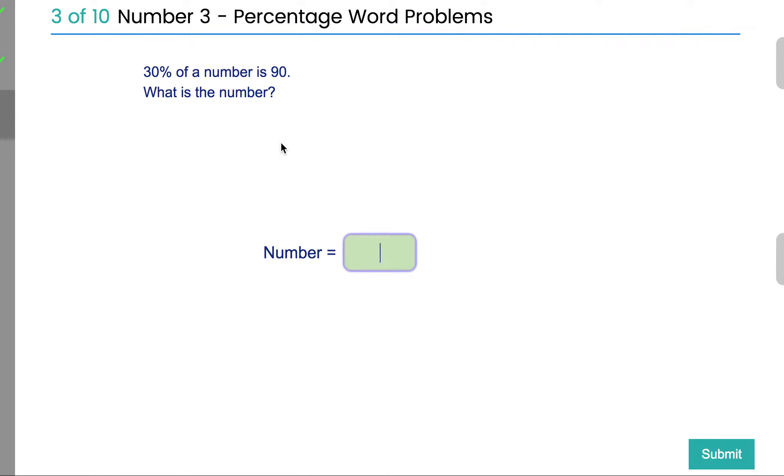One more. 30% of the number is 90. What is the number? Well, again, if we're going to try and work out 100%, we're going to try and work out what the total number is, we need to go and find ourselves what 10% would be.